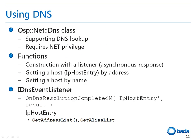Now let's have a look at how to use DNS. The DNS APIs belong to the Net privileged group. The OSPNetDNS class is the class that supports DNS lookup. The class is constructed with a listener and provides functions to get the host name from the address or to get the host address from the name. Since these DNS lookup requests are handled asynchronously, the data is received through the IDNSEventListener listener. The IDNSEventListener class has the OnDNSResolutionCompletedN function that receives the IPHost entry pointer as a parameter. By specifying the GetAddressList or GetAliasList function as a parameter, you can get the address or alias.